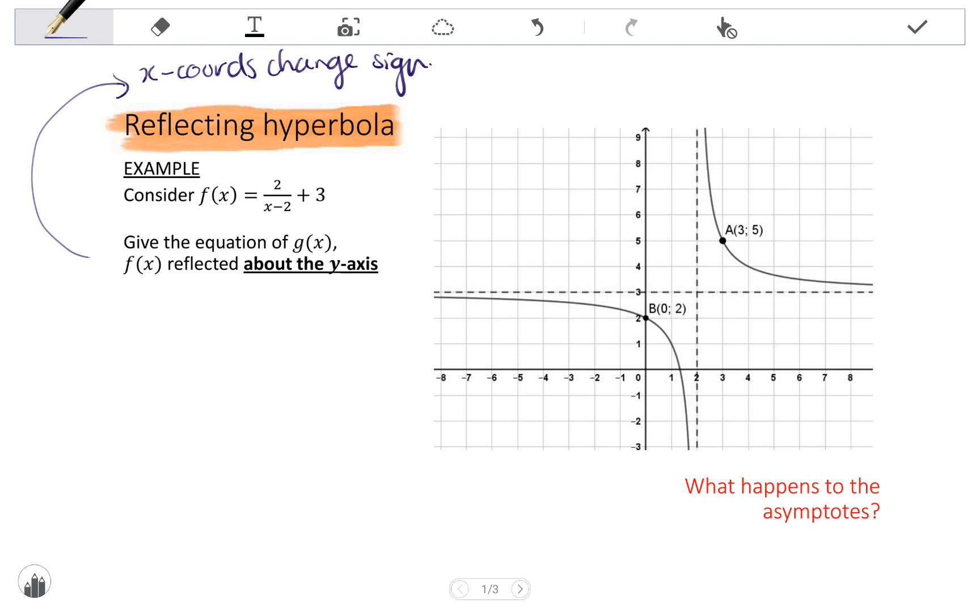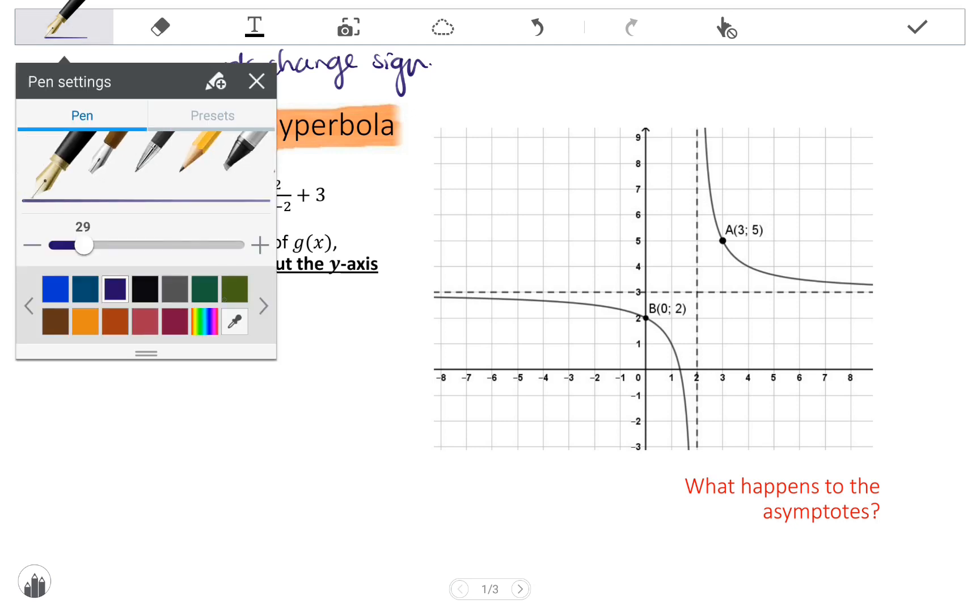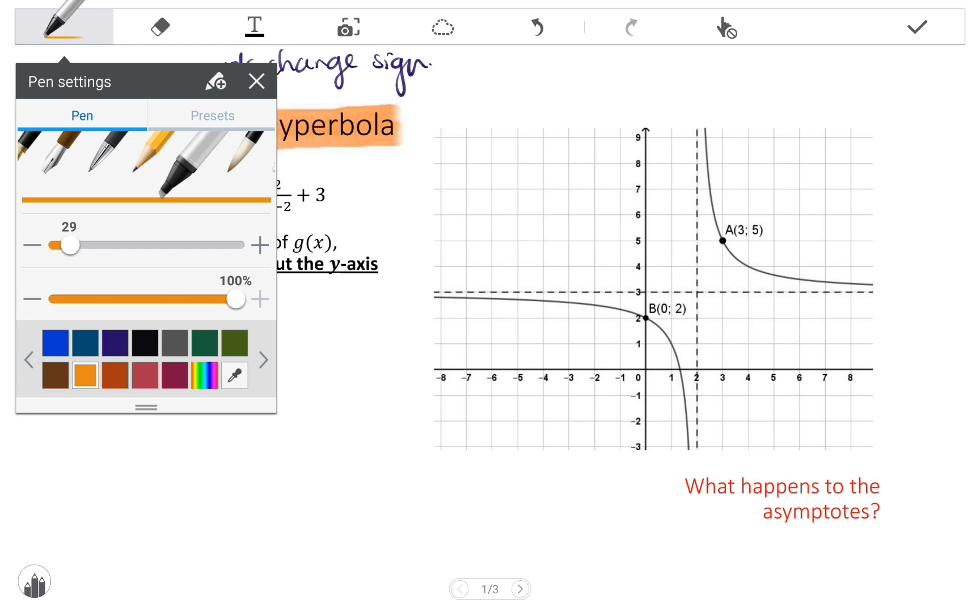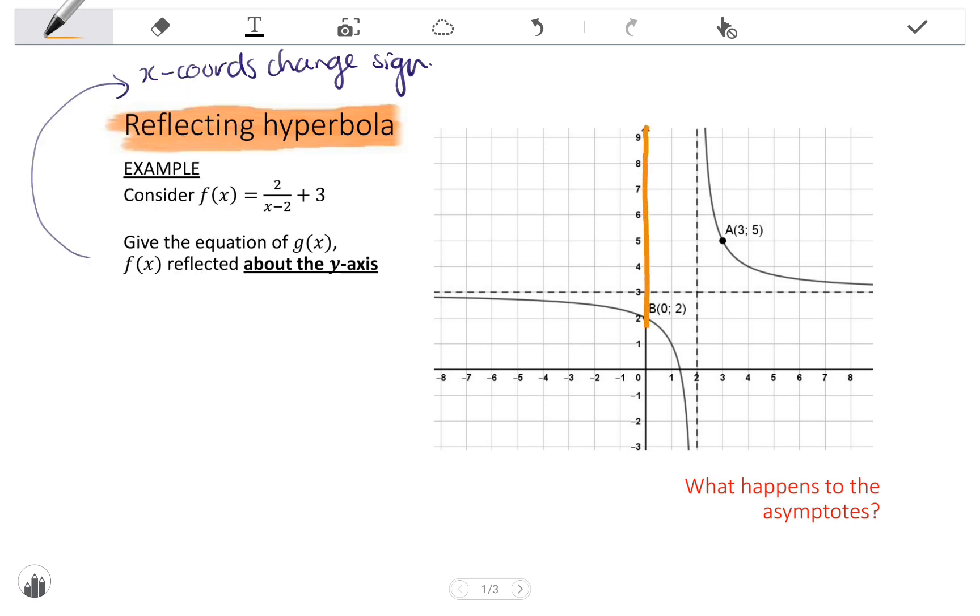And it means that the graph is symmetrical about the y-axis, so mirror image. I'm just going to highlight the y-axis for us so that we can more easily see what we are reflecting about because this graph is going to get messy.